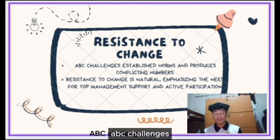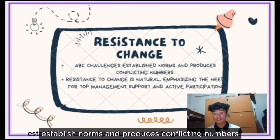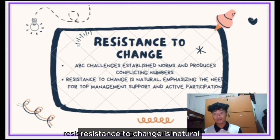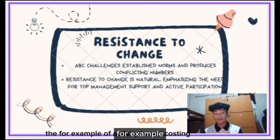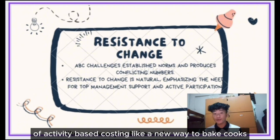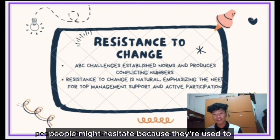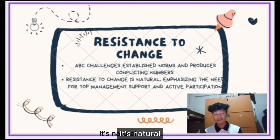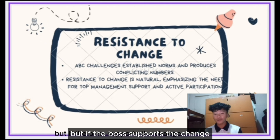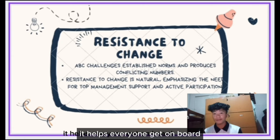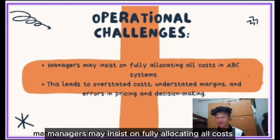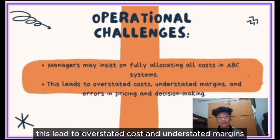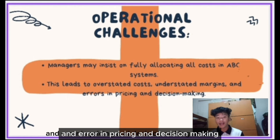Resistance to Change: ABC challenges established norms and produces conflicting numbers. Resistance to change is natural, emphasizing the need for top management support and active participation. Operational Challenges: Managers may insist on fully allocating all costs in ABC systems, which can lead to overstated costs, understated margins, and errors in pricing and decision-making.